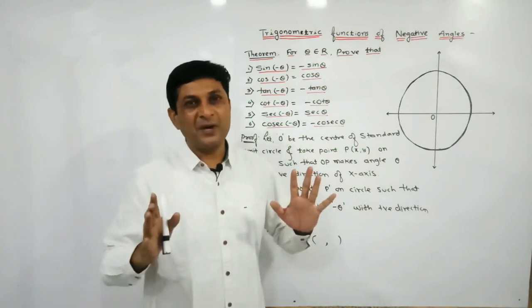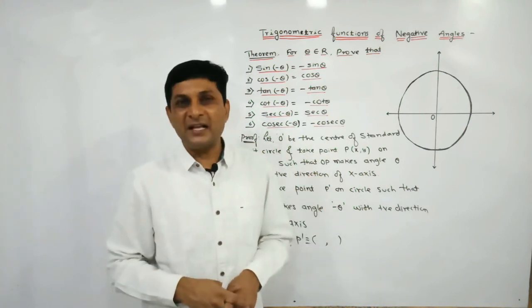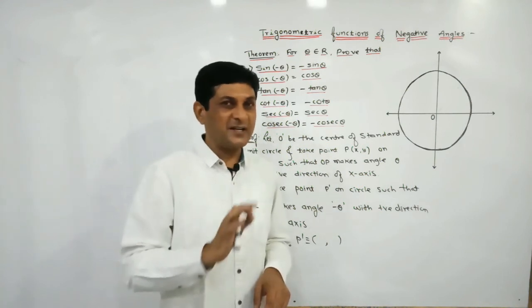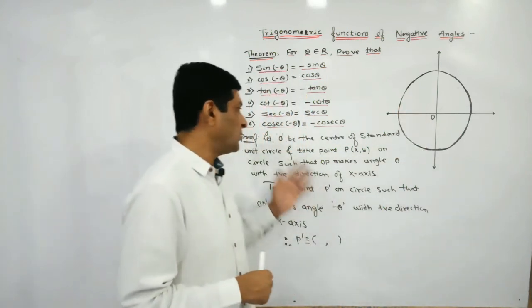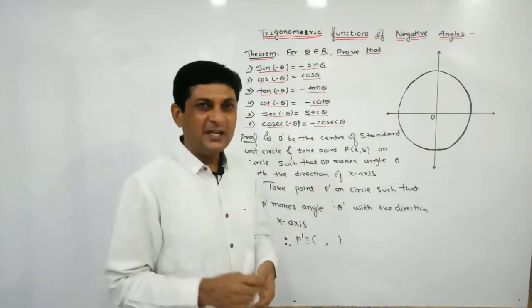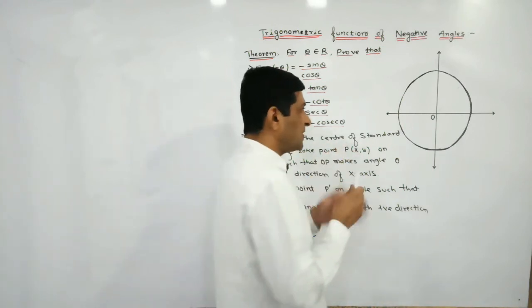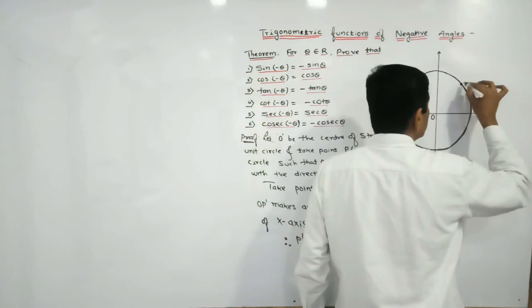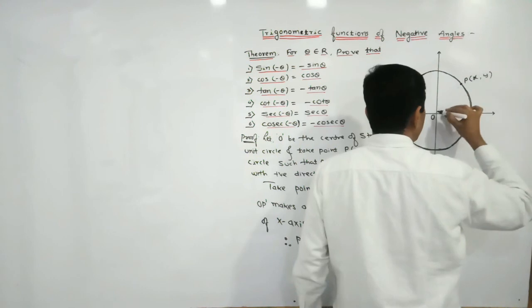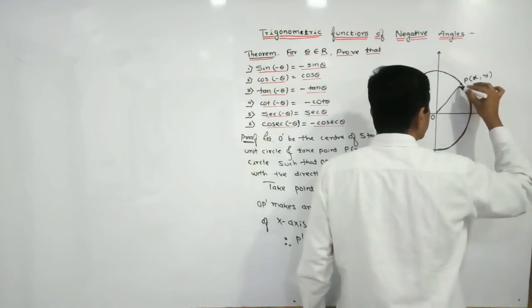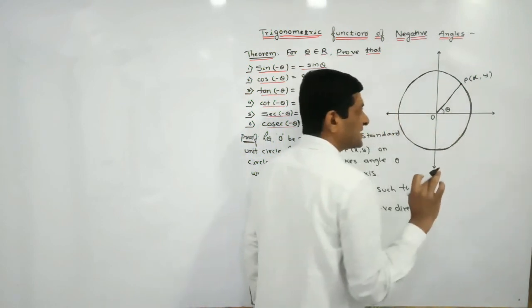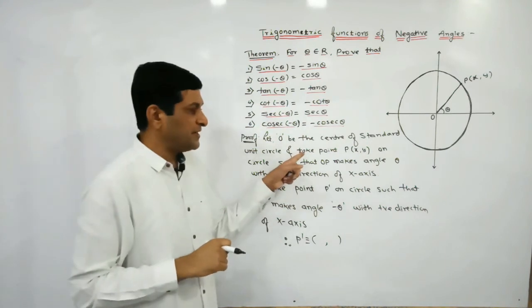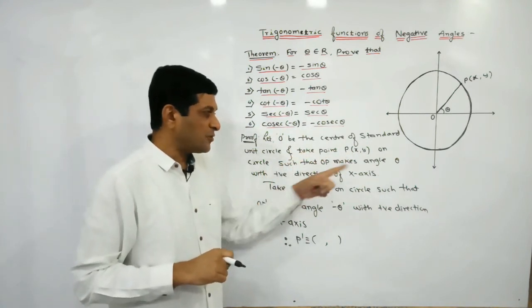Every result in class 11th we are going to prove with the help of the standard unit circle. Here we have considered one standard unit circle with center O. Let O be the center. Take a point P on this standard unit circle with coordinates (x, y). OP makes angle theta with the positive direction of the x-axis.